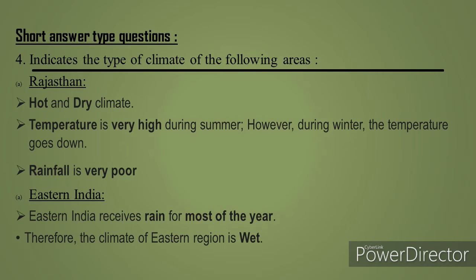For Rajasthan: hot and dry climate, temperature very high during summer but low during winter, and rainfall is very poor or there is no rainfall at all. In Eastern India, such as Assam, they receive rain for most of the year, and therefore the climate there is always wet.